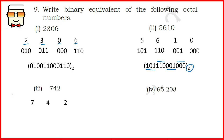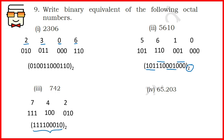The third part says 742 is to be converted to binary. 7 is represented by 111, 4 by 100, and 2 by 010. Writing them together gives 111 100 010 in the binary number system.